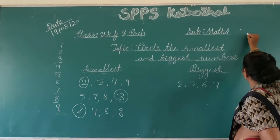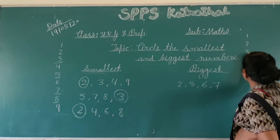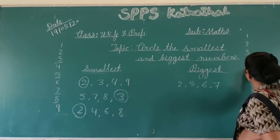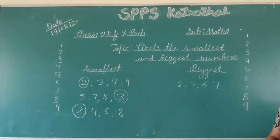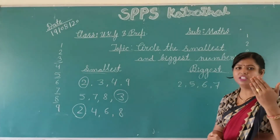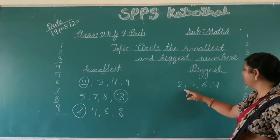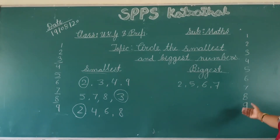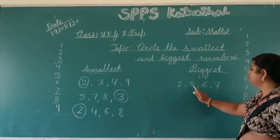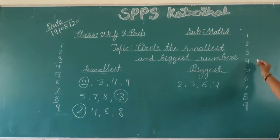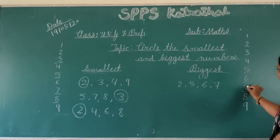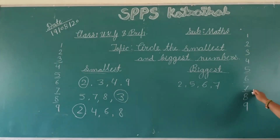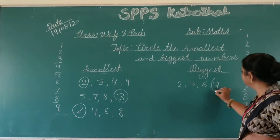2, 5, 6, 7. We have seen the numbers 1 to 9. 1, 2, 3, 4, 5. 2, 5, 6, 7, 8 and 9. So, smallest number 1 to 1. The numbers are 2, 5, 6 and 7. 7 is the last number, so 7 is the biggest.